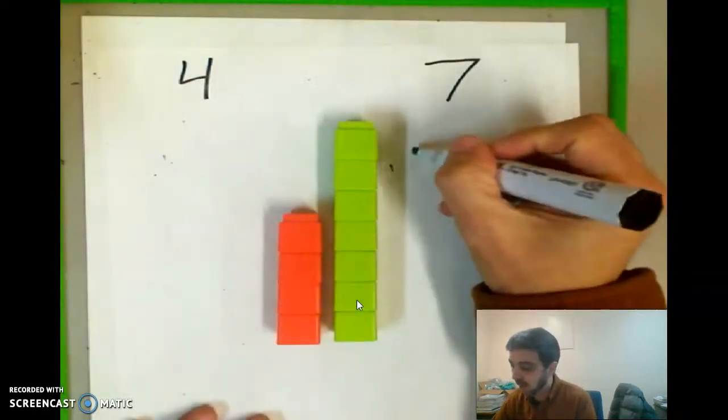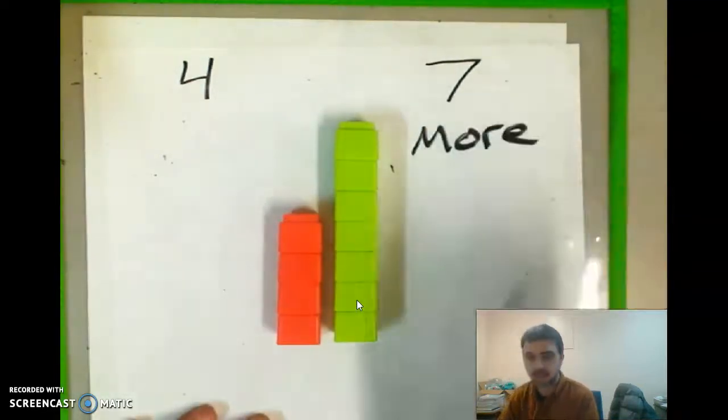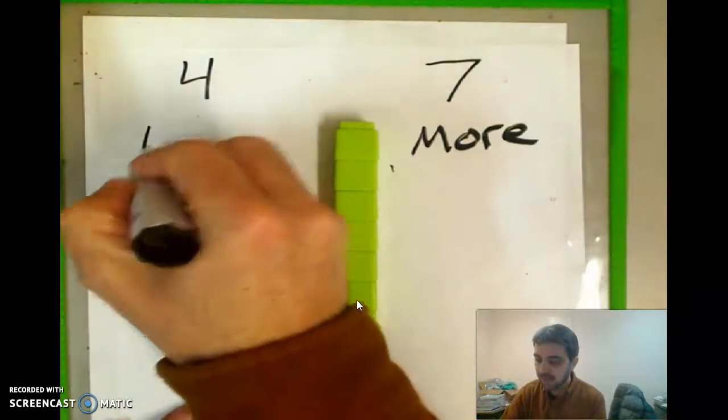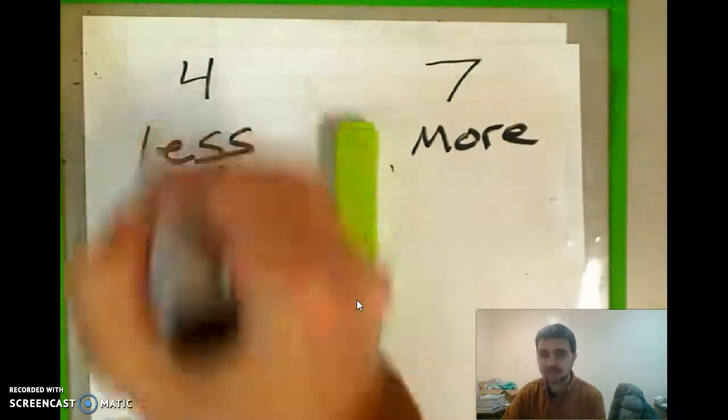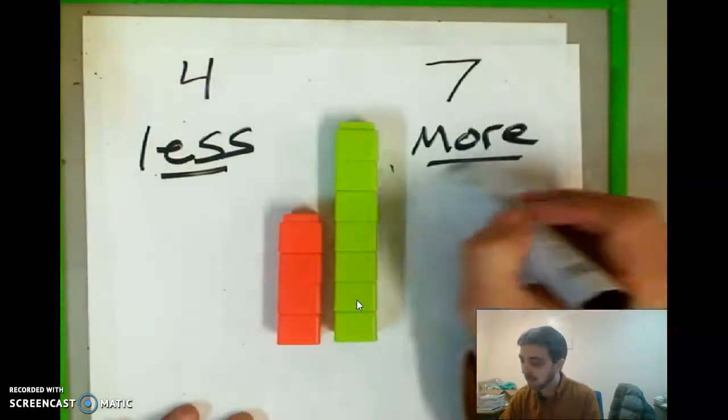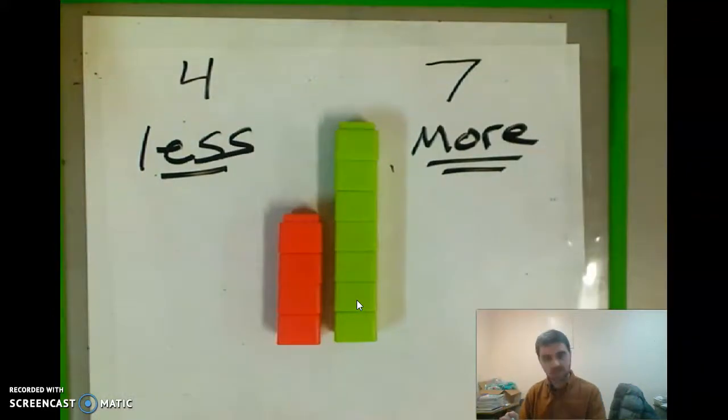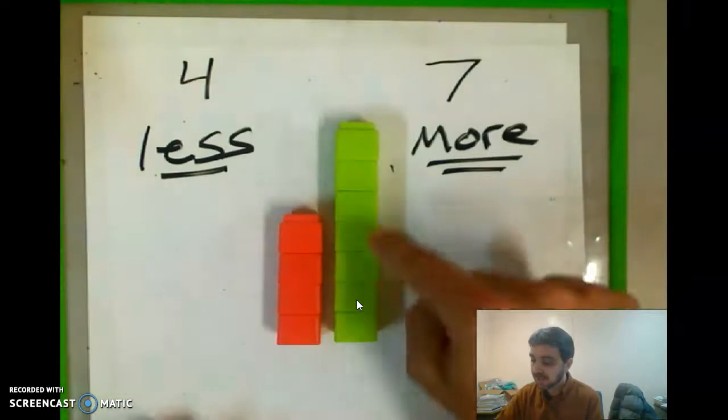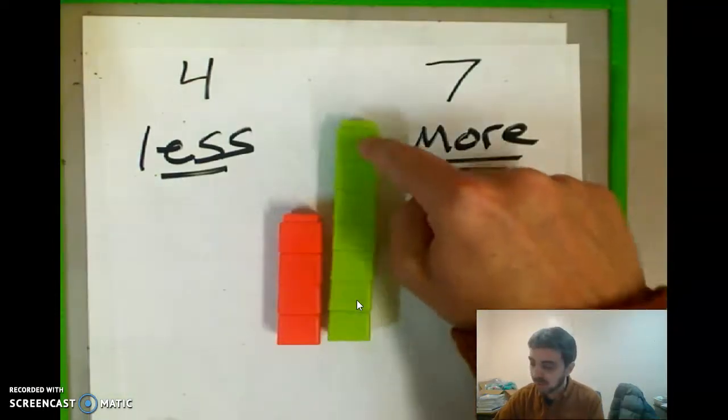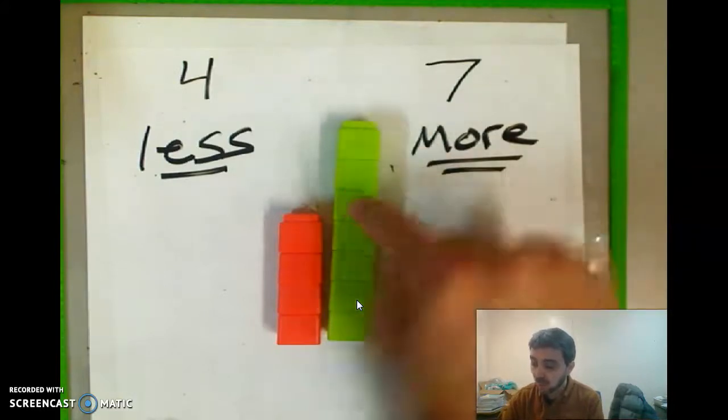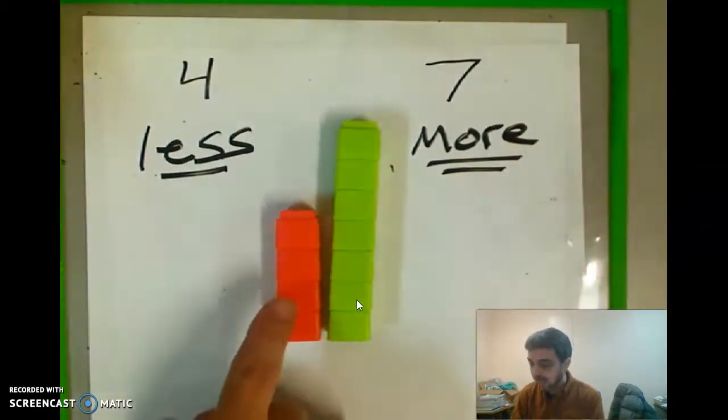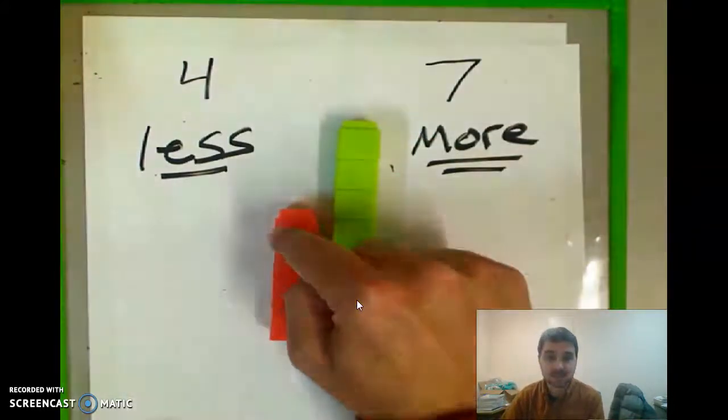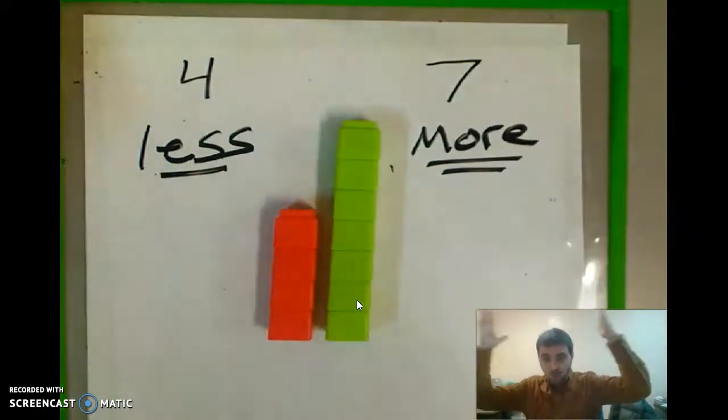If I put them right next to each other, you can see, right? You can see that seven is a lot more. That word is more - M-O-R-E. And four is less than seven, and seven is more than four. Hey, that rhymes. More than four. In fact, you can see it's three more than four. Because look, it's one, two, three. It has three more than four, and four has three less than seven. I hope you're holding on to your brain because it might explode.